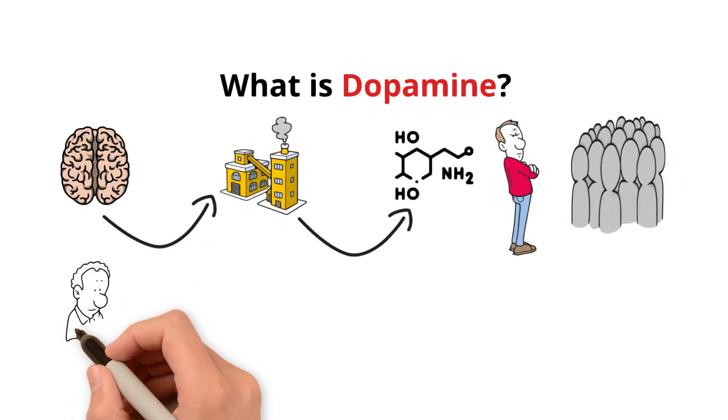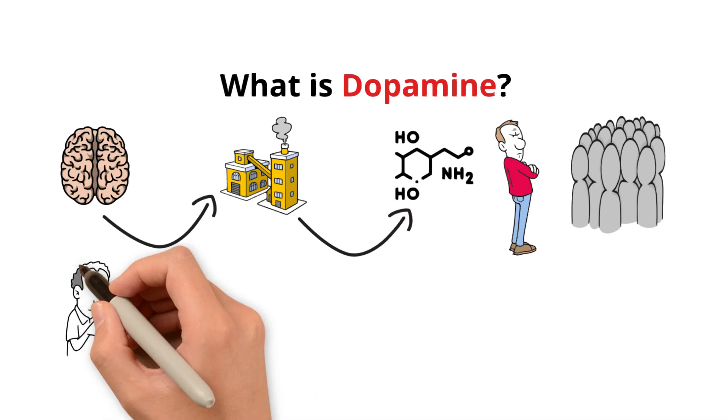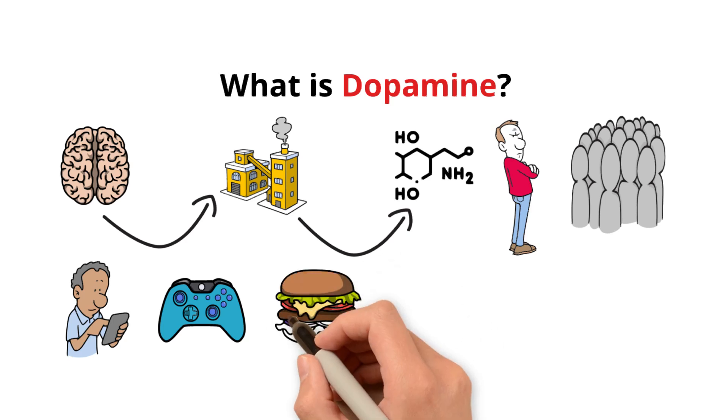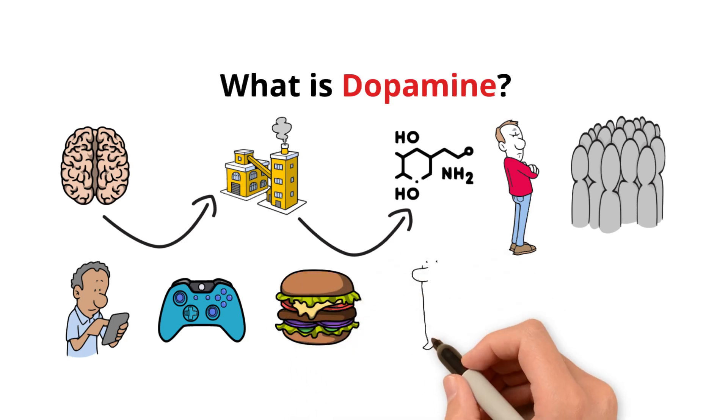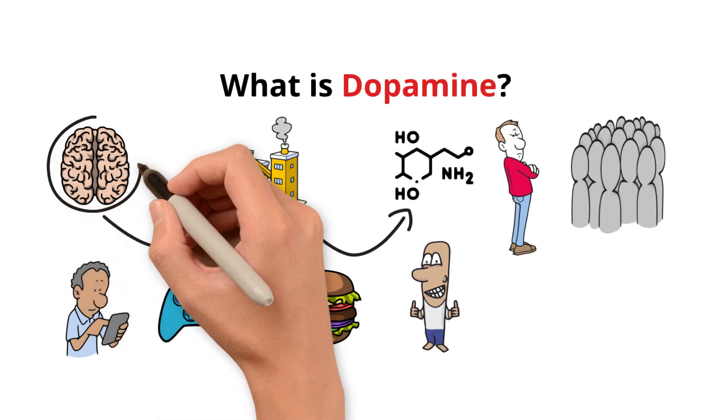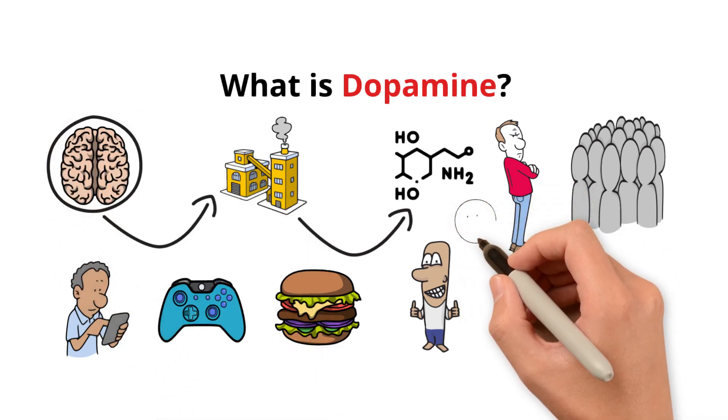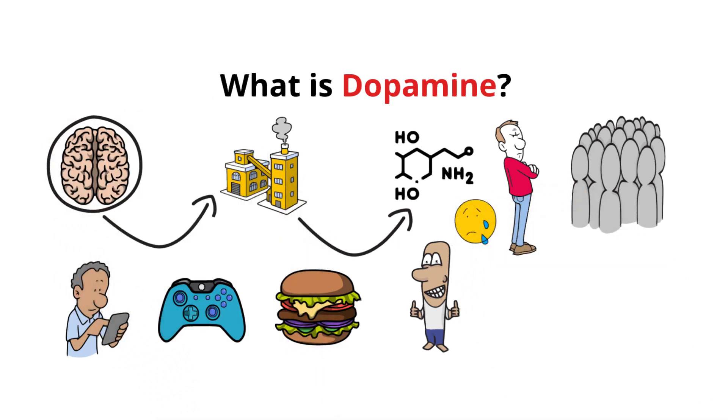And here's the scary part. The more addicted you get to instant rewards, like scrolling through social media, playing video games, or eating junk food, the more dopamine gets released. It feels good in the moment, but eventually, it's like your brain is constantly chasing a high. And when dopamine doesn't get what it wants, it feels sad.